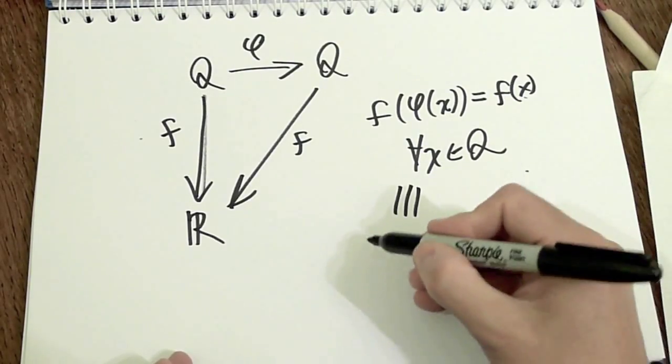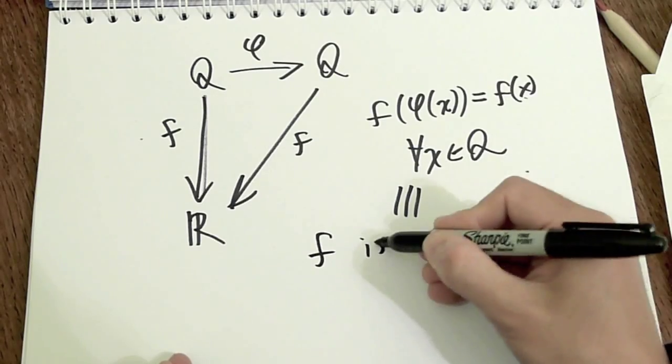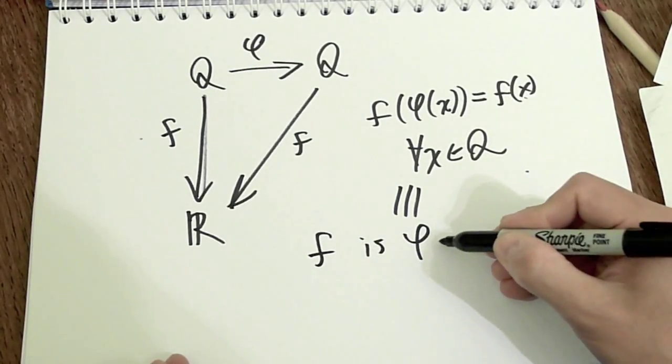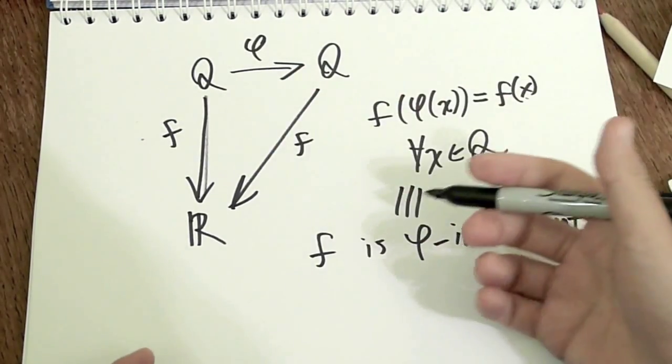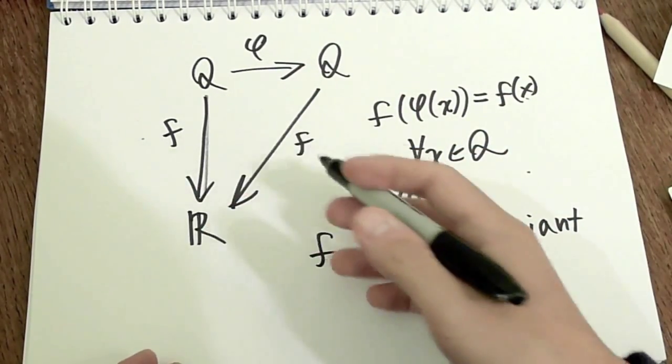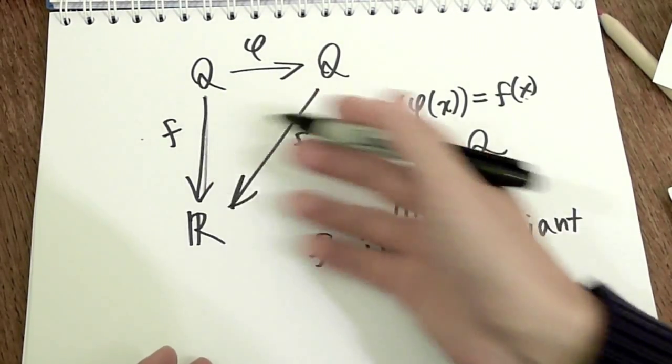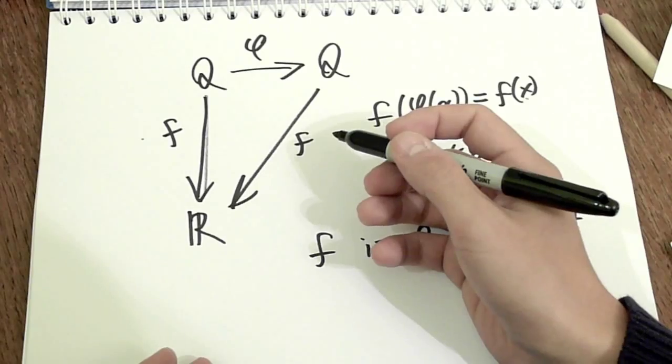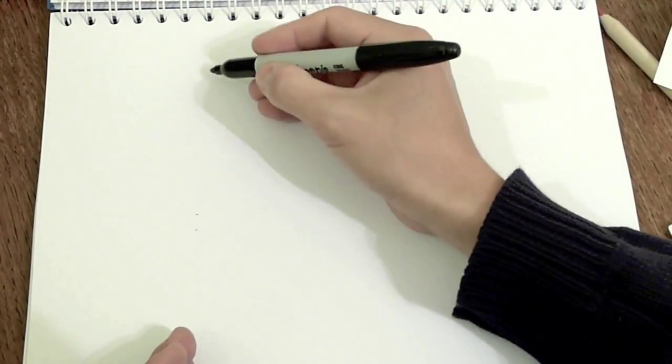The statement is equivalent to saying f is phi invariant. The takeaway message, the big thing here is that something is preserved about f despite the action of phi. Let me give you an example, which is more visceral. So instead of q, some smooth manifold, let's take something we really know.